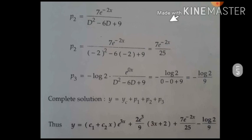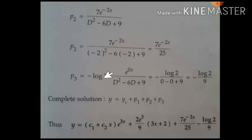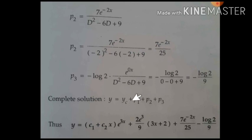For P2, it is Type 1: replace d by a = −2 wherever d appears, giving a non-zero denominator. For P3, the constant log 2: convert to Type 1 by multiplying with e^(0x), replace d by 0, giving −log 2 / 9. Now write the complete solution: y = yc + yp, where yp is P1 + P2 + P3. Substitute the answers to get the final complete solution.